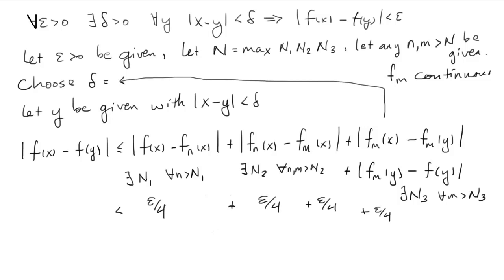Delta is defined because M is already given. And there we have it. C[0,1] is a complete linear space. A Banach space.